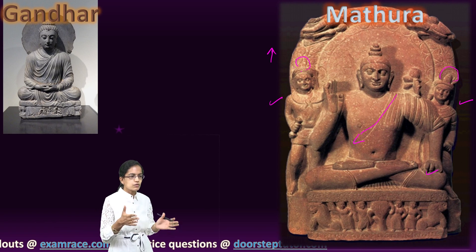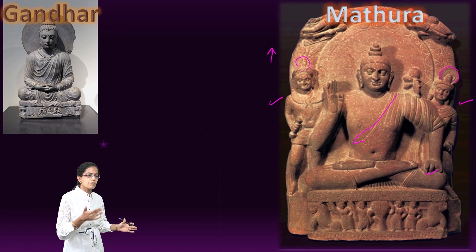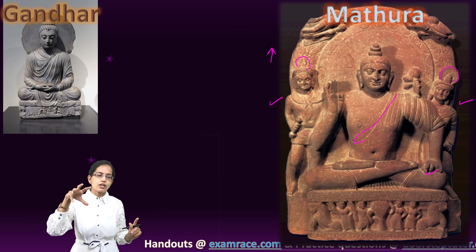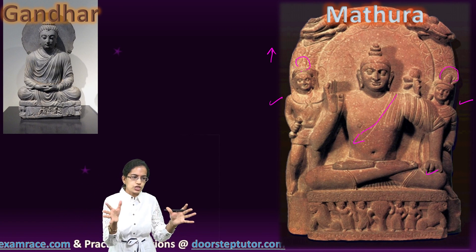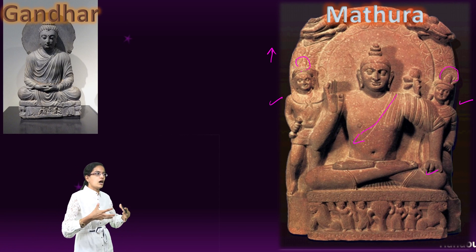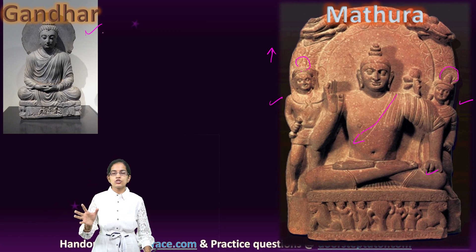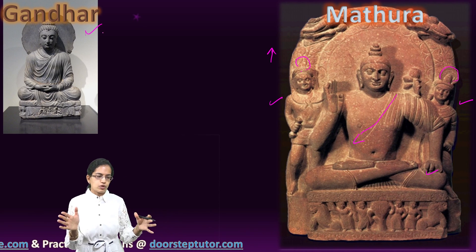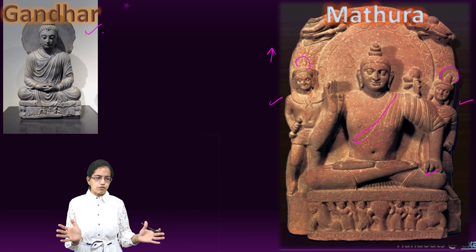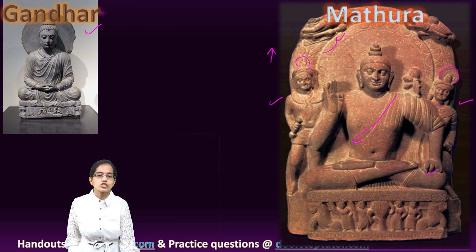Mathura style was very unique: Buddha was depicted with broad shoulders and a fleshy body. The Sarnath style, in contrast, showed a transparent drapery covering both shoulders, and the halo around the head showed little ornamentation. In Mathura style, the decoration was very profuse and intense, focusing on a deeper personality, whereas the Gandhara style showed the calmness of Buddha. The halo in Mathura style was very large and decorated with geometrical patterns or motifs.